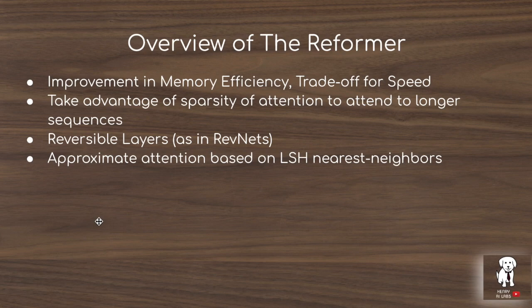Even if you extend the sequence length to 64,000, you'd probably only look at 32 or 64 words when doing the query times key transpose divided by the normalizing factor. After passing through the softmax function, you're only really attending to so many words — the softmax blows up large values and really shrinks small values.